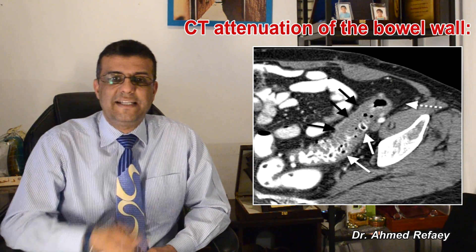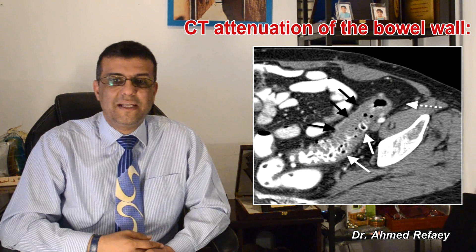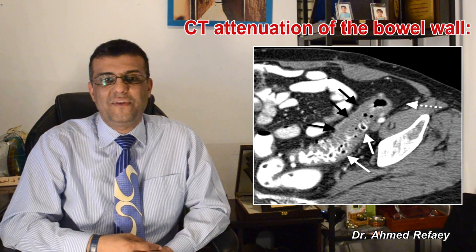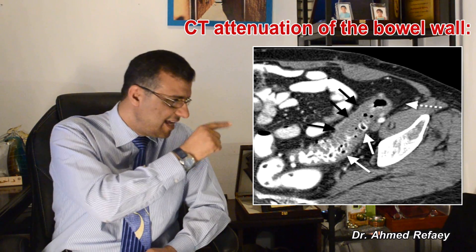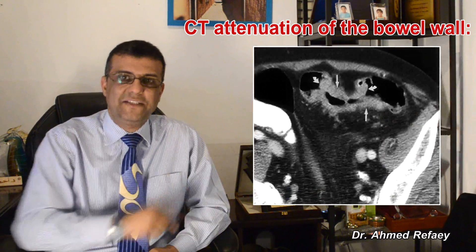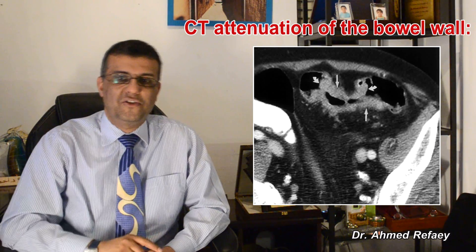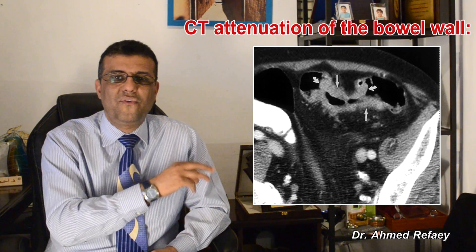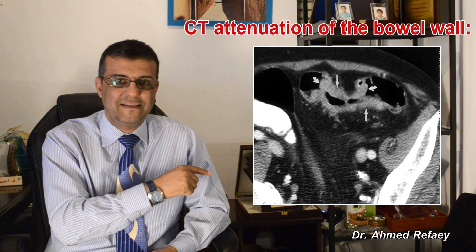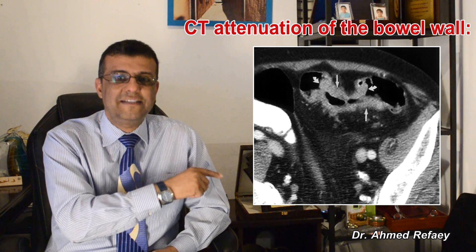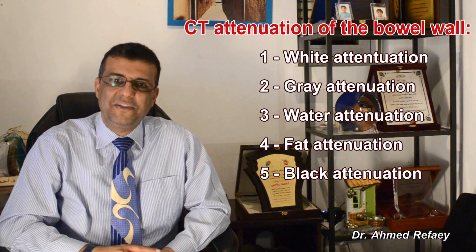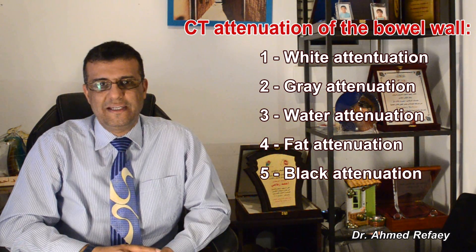This is a case of diverticulitis. There are multiple diverticula in the sigmoid colon associated with marked thickening of the wall with a degree of enhancement similar to the adjacent muscle. Another example of gray attenuation is a case of sigmoid carcinoma, showing an annular mass lesion involving the sigmoid causing shouldering of the wall, with enhancement similar to the adjacent muscle.